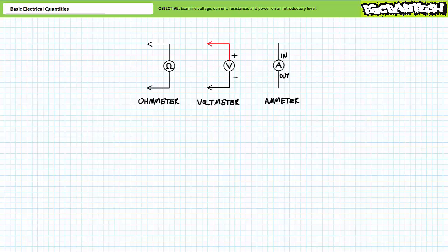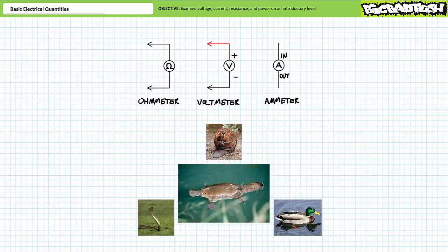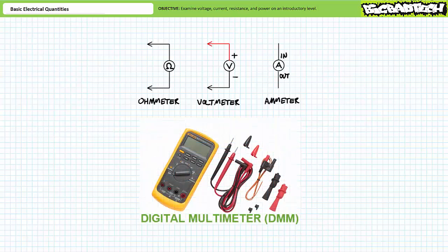Carrying three separate meters that do three separate tasks would be kind of a pain, so quite like mixing a cobra, a beaver, and a duck together to make a platypus, you can combine all three of these meters together, and more, into something called a digital multimeter. Digital multimeters are often referred to as DMMs.